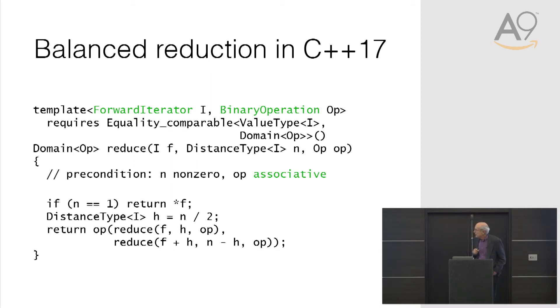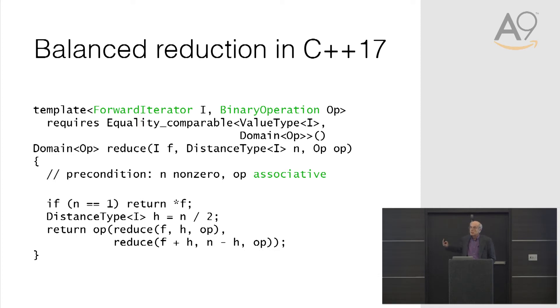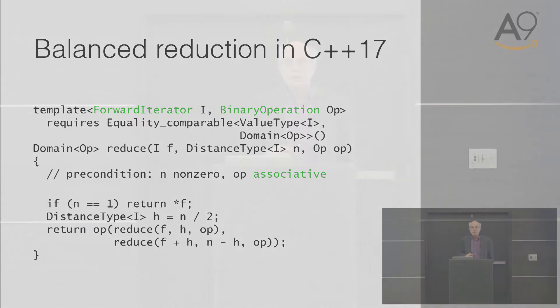The associativity we have to express a different way with a precondition, because you might pass in an operator that's not associative — that would be bad. It wouldn't do what you wanted. In Dave Musser's terminology, we have a proof obligation: every time you invoke this procedure, you need to establish that the particular operator you're passing in is associative.